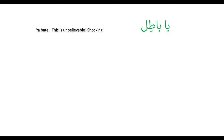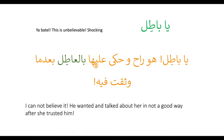Example: Ya'a batul — unbelievable, shocking. Huwa raah uhaqa alayha — he talked about her and started spreading rumors — bil'atul, in a bad way. Baad ma wathaqat fi — after she had trusted him. So the phrase 'ya'a batul' means this is unbelievable or shocking.